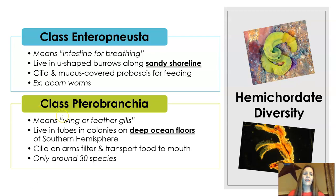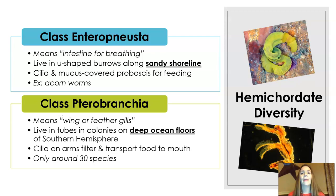Class Pterobranchia, on the other hand, means 'wings or feather gills.' These are the opposite in terms of where they live — they live on deep ocean floors in tubes, and the tubes are typically in colonies. They also have cilia that help transport food to their mouth. There are really only around 30 species, so we'll just call them the pterobranchs.